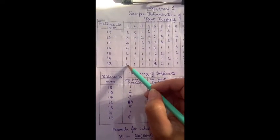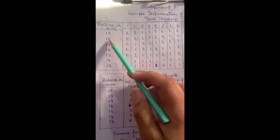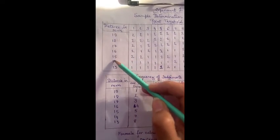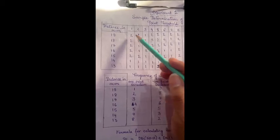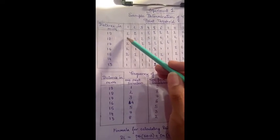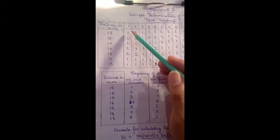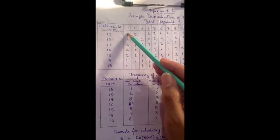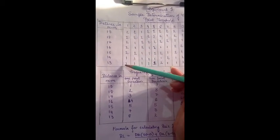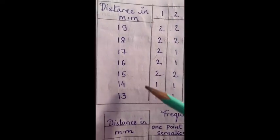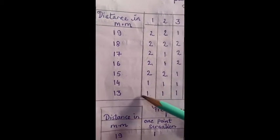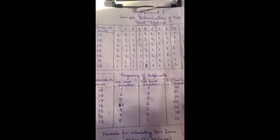We have to present randomly one distance at a time. The subject is blindfolded. I have to present the points — two points or one point. I record the first trial, then second, third, fourth — we have to present 10 trials for each distance.